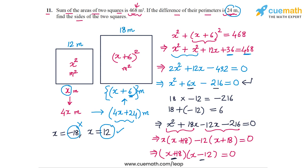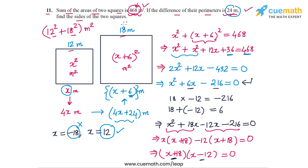Let's verify the answer. The perimeter of the smaller square is 48 meters and of the larger square is 72 meters, and their difference is 24 meters — correct. The sum of the areas is 12 squared plus 18 squared, which is 144 plus 324, equal to 468 square meters — which matches the given information. So the sides of the two squares are 12 meters and 18 meters.